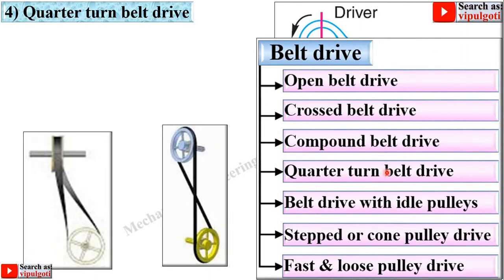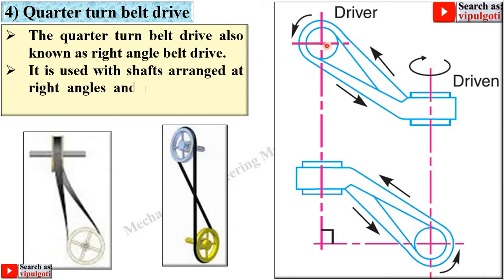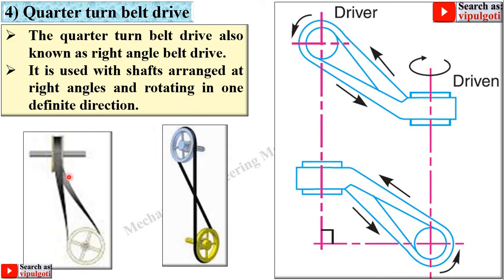Fourth: quarter turn belt drive. The quarter turn belt drive is also known as right angle belt drive because both shafts are exactly at right angles to each other. It is used with shafts arranged at right angles, rotating in one definite direction. Two views are given so you can understand it easily, and this figure can be used in the examination.